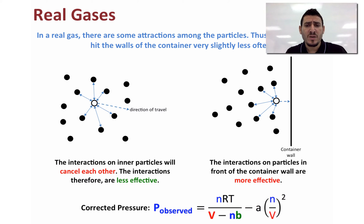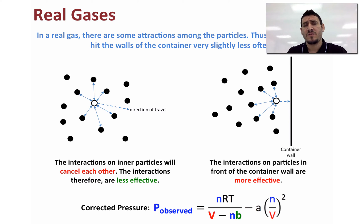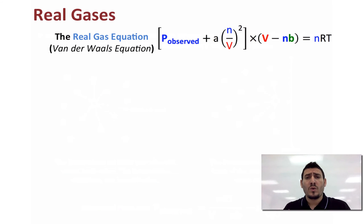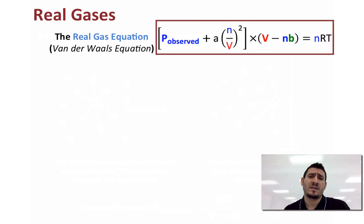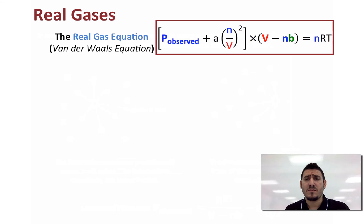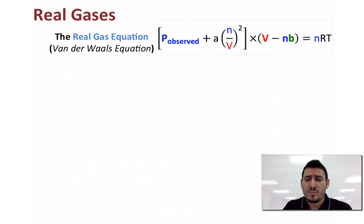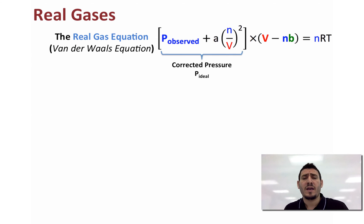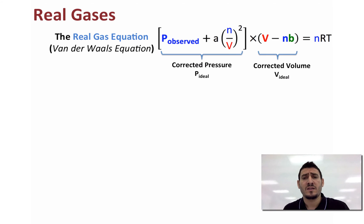The observed pressure equals nRT divided by V minus nB (the volume correction) minus the pressure correction factor a multiplied by n over V squared. The van der Waals equation is therefore: the observed pressure plus a times (n over V)² all multiplied by V minus nB equals nRT. Here, observed pressure plus a(n/V)² is the corrected or ideal pressure, and V minus nB is the corrected or ideal volume.